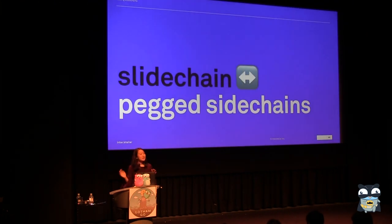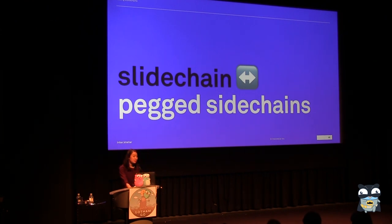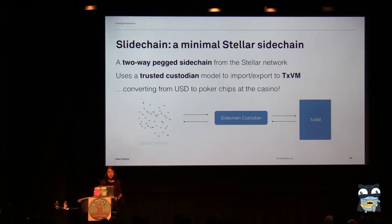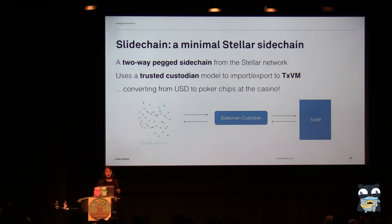Switching gears to another project — another experiment the Interstellar team has been working on is called Slidechain. This is an implementation of what are called pegged sidechains. A two-way pegged sidechain is basically a way of transferring value between one network and another. A good analogy is that it's like when you transfer US dollars into poker chips at the casino.